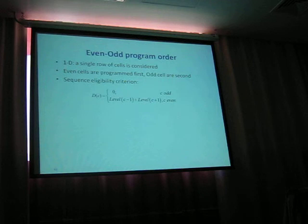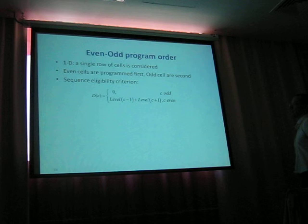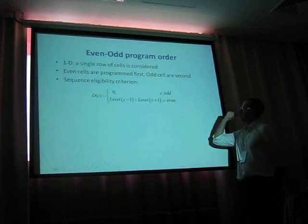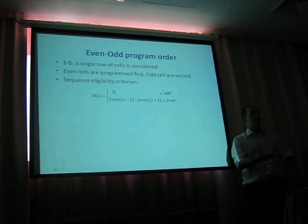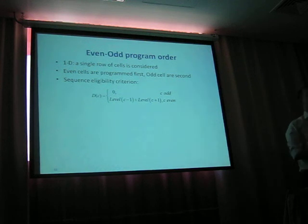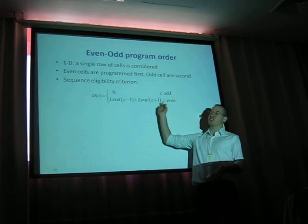Let's take another example by looking at even-odd programming order, in which we consider a one-dimensional single row of cells. The even cells are programmed first, and the odd cells are second. We can look at this intercell severity function, the sequence eligibility criterion, in which the DC of odd cells is zero because they're programmed the latest.